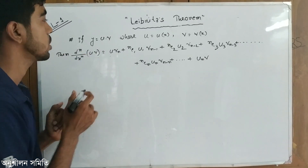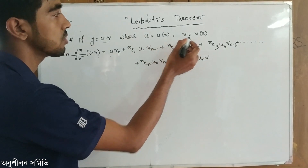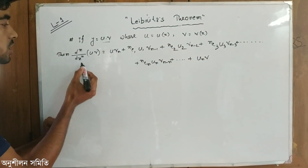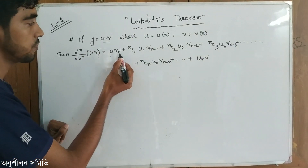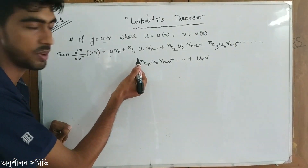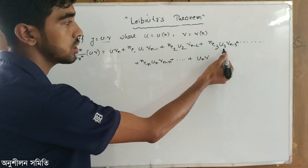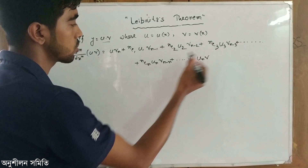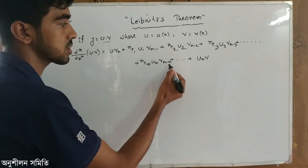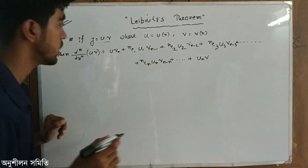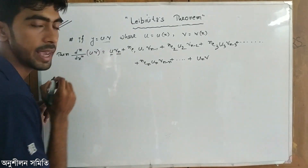For a uv function, where u is equal to u(x) and v is equal to v(x), I am going to write the nth derivative: u·v_n plus nC1·u1·v_{n-1} plus nC2·u2·v_{n-2} plus nC3·u3·v_{n-3} plus dot dot dot plus nCr·ur·v_{n-r} plus dot dot dot plus u_n·v.